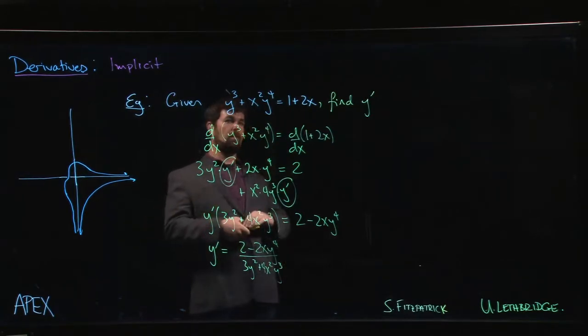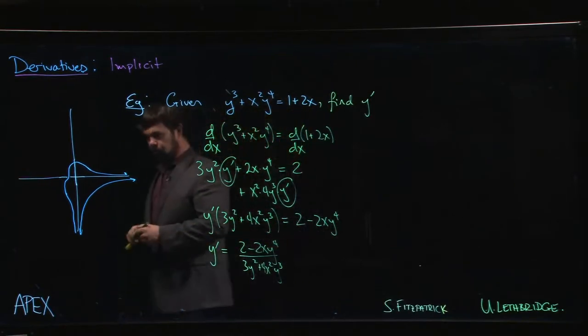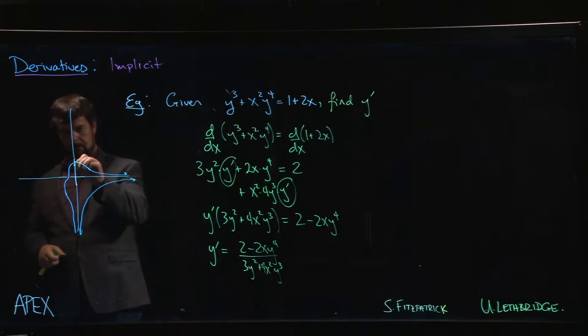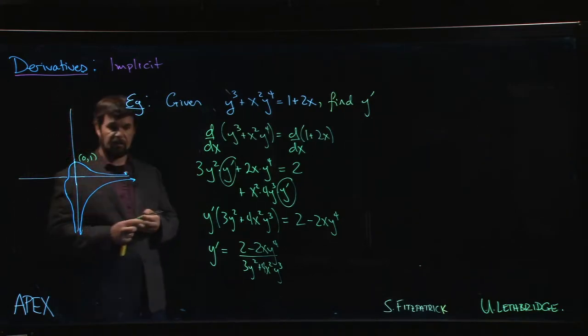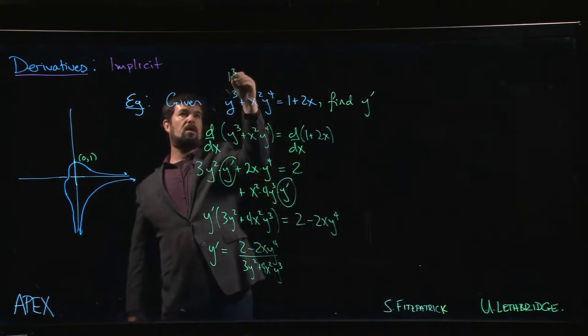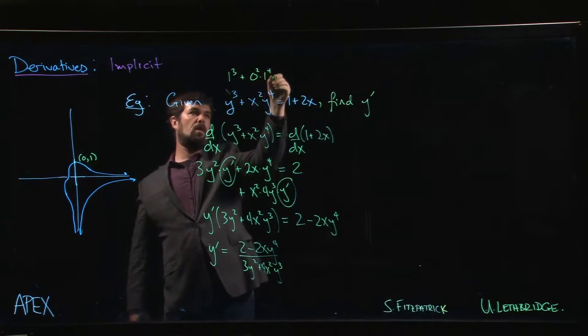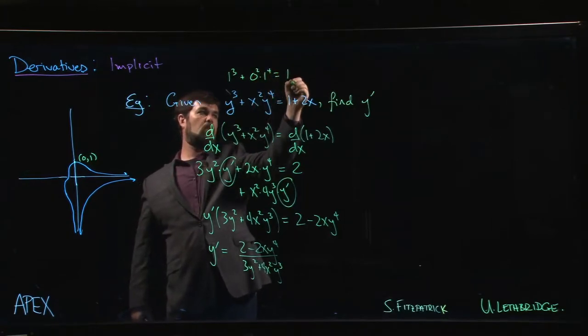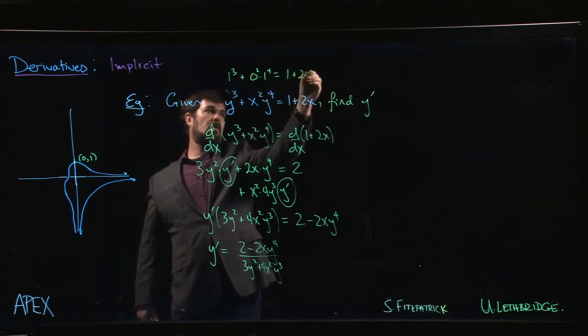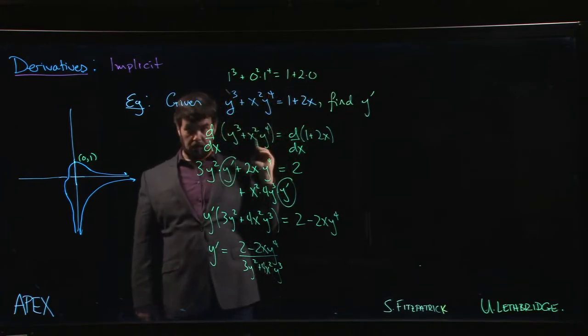Now it just so happens that one such solution is x equals 0, y equals 1. So we can check. 1 cubed plus 0 squared times 1 to the 4 is indeed equal to 1 plus 2 times 0. Right? 1 plus 0 equals 1 plus 0. Good.